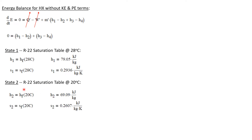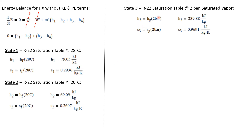For state two, we go to the R22 saturation table at 20 degrees C. This is also a sub-cooled liquid, so H2 is H sub F at 20 degrees C, and S2 is S sub F at 20 degrees C. For state three, R22 is fully defined as having a pressure of 2 bar and being a saturated vapor, so H3 is H sub G at 2 bar and S3 is S sub G at 2 bar. Those values are taken directly from the table.